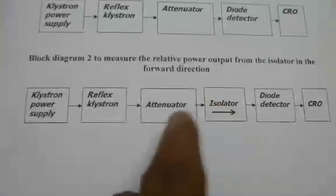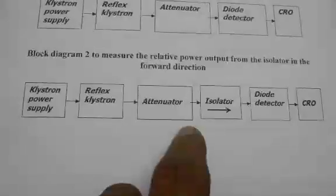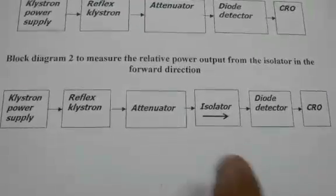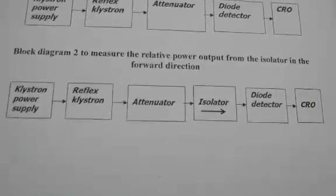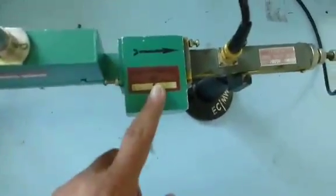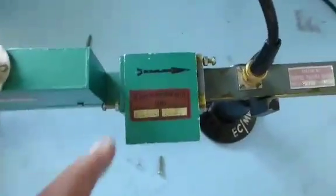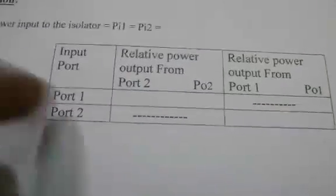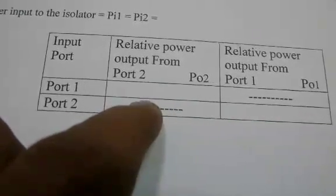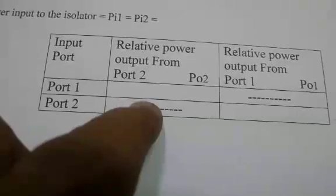Now the input is given to the isolator to find the relative power output. The isolator is connected in the forward direction, and the output in the forward direction is measured. The output is around 2.8 divisions. This is noted as the relative power output from port two, which is 2.8.